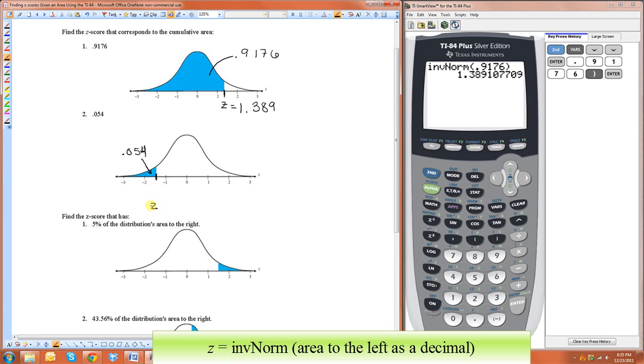And all we have to do is do the inverse normal. So, inverse normal of 0.054. And it's going to be negative 1.607. So that means this number right here is negative 1.607.